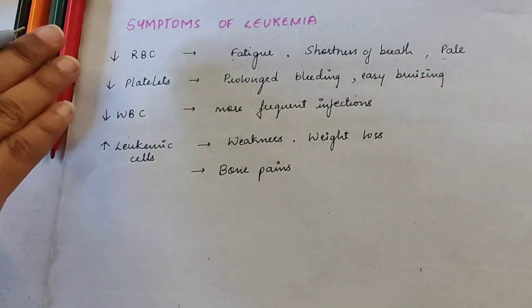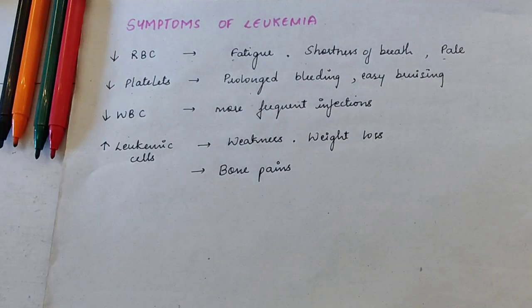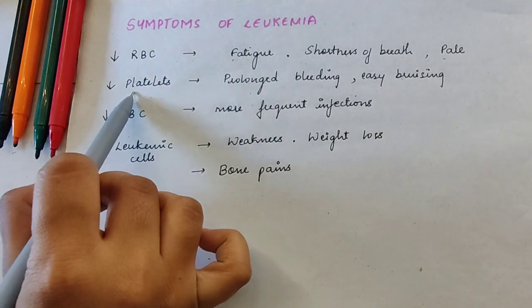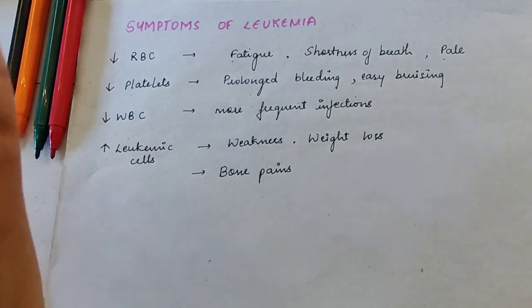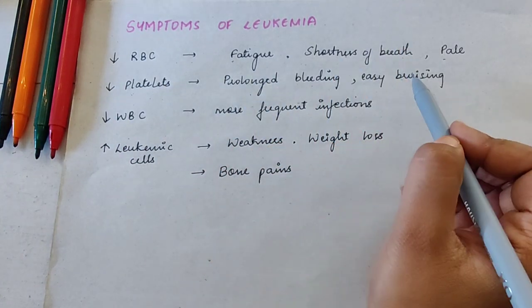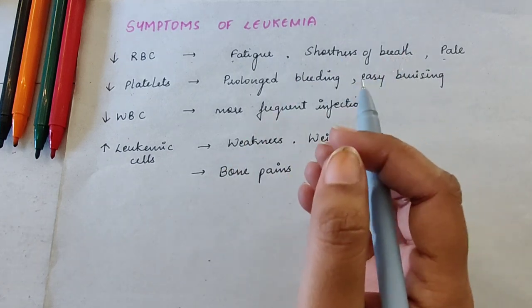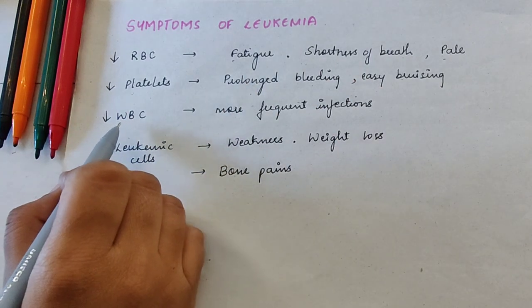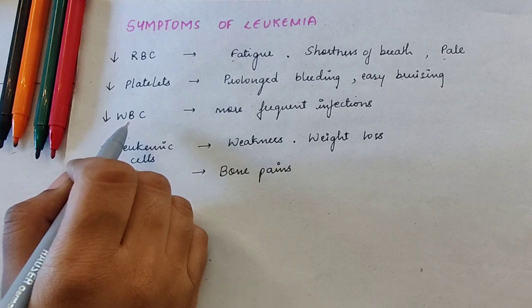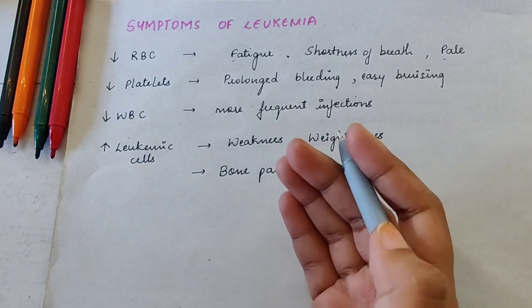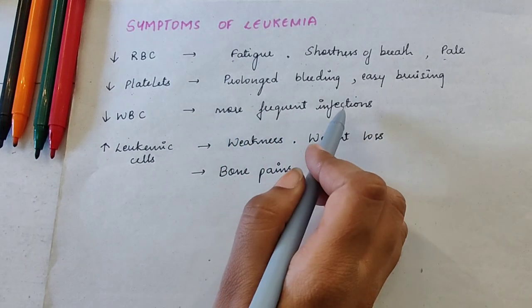Along with RBCs, platelets are also decreased. The main work of platelets is to clot — whenever there is bleeding it will stop the bleeding. But as platelets are less, if there is any bleeding it will lead to prolonged bleeding time and easy bruising — even small bruises, a person can be bruised easily. Now, WBCs — we all know WBCs are meant to protect us from infections. If there is less WBC, obviously a person's immunity will be low, so he will have more and more frequent infections.